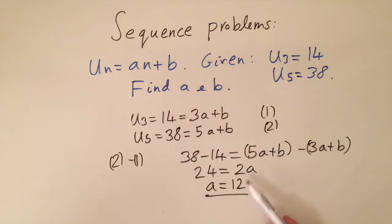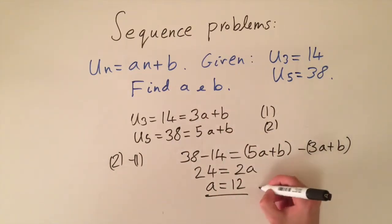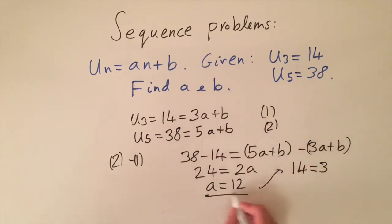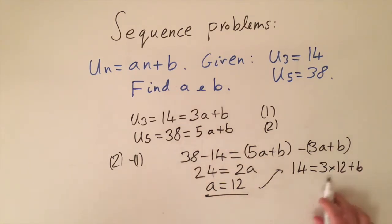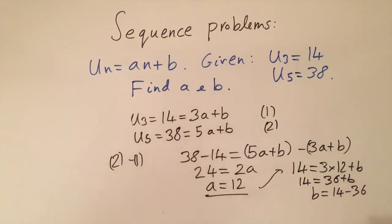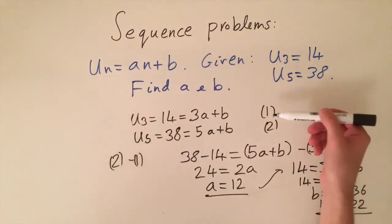To find b, we substitute a = 12 into the first equation: 14 = 3(12) + b = 36 + b. Subtracting 36 from both sides gives b = 14 - 36 = -22. This problem was interesting because it brought different areas of maths together — we found the values of a and b in a sequence by solving a system of linear equations.